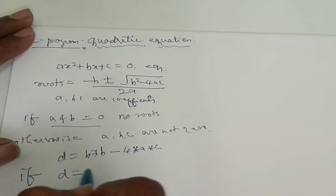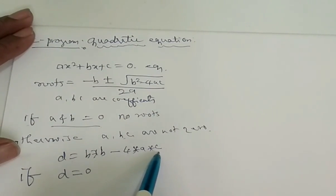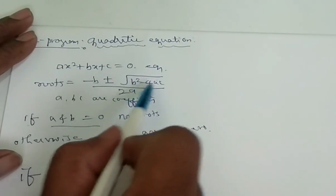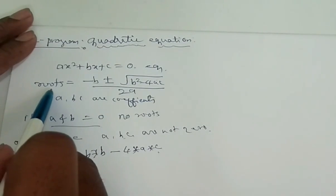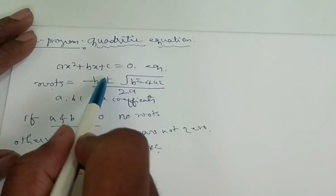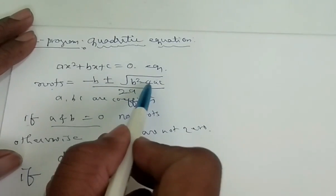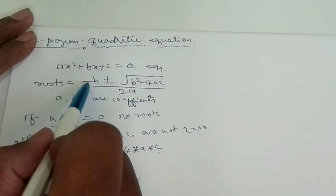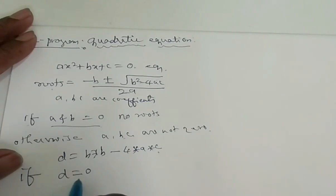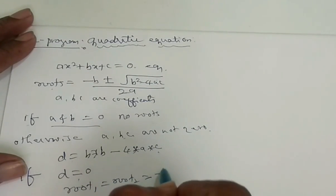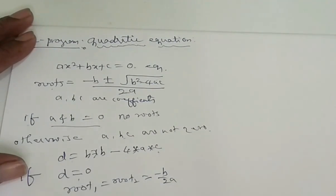If D is equal to 0, meaning B squared minus 4AC equals 0, this term becomes 0. At that point, the roots are minus B divided by 2A only — because the plus or minus term vanishes. So root 1 and root 2 are both equal to minus B divided by 2A.